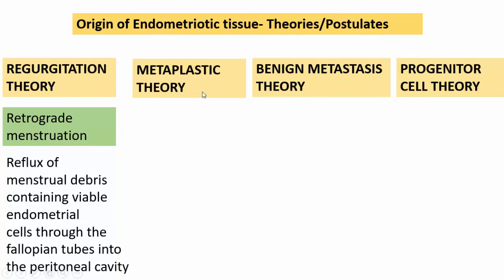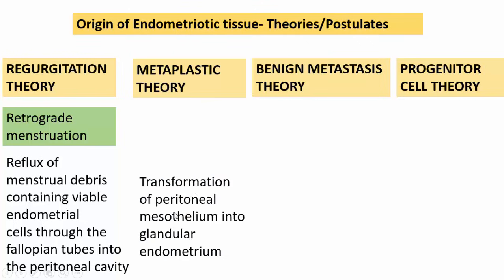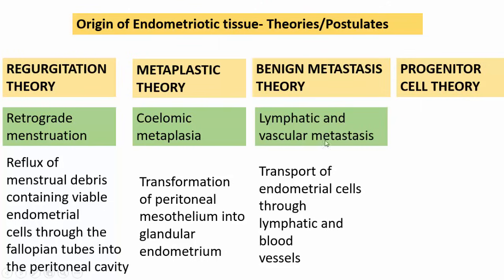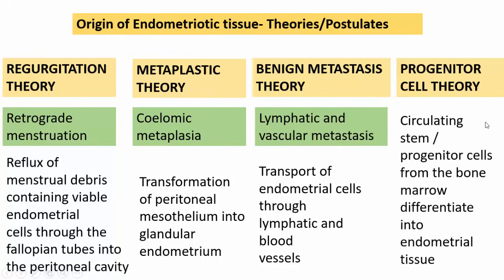The metaplastic theory says there is transformation of peritoneal mesothelium into glandular endometrium — referred to as coelomic metaplasia. The benign metastasis theory involves transport of endometrial cells through the lymphatic and blood vessels — essentially lymphatic and vascular spread, though it is not a malignant entity. The progenitor cell theory proposes that circulating stem cells or progenitor cells from the bone marrow differentiate into endometrial tissue at locations outside the uterus.